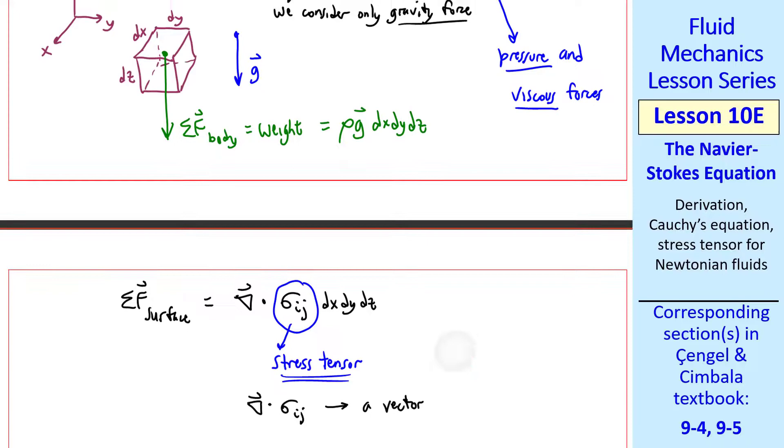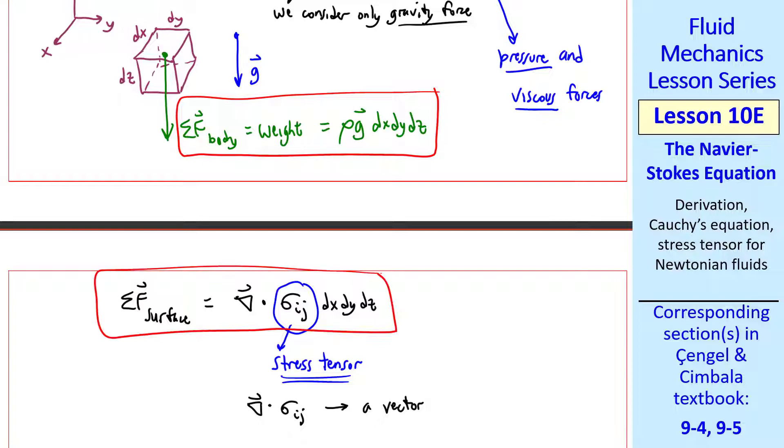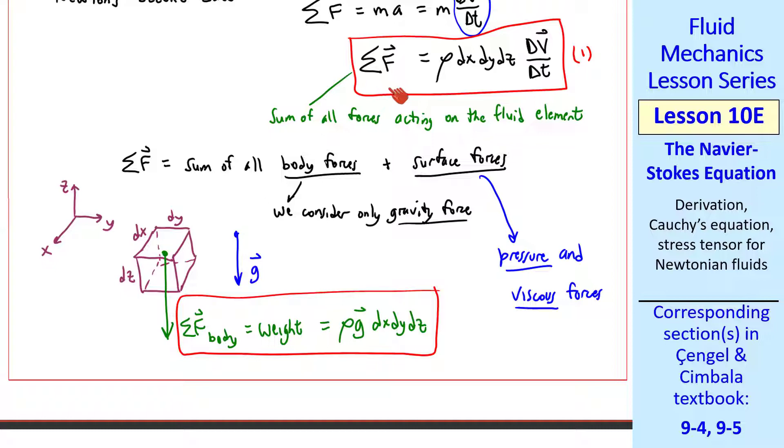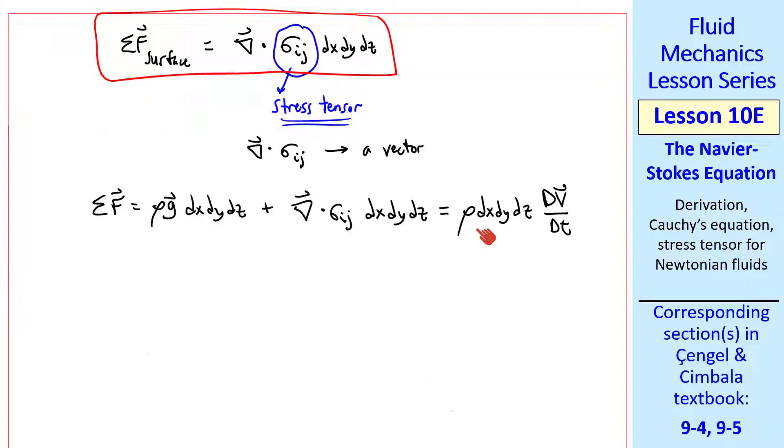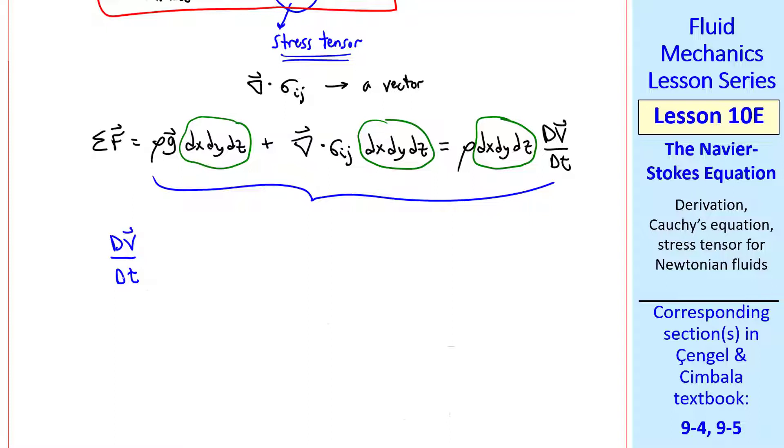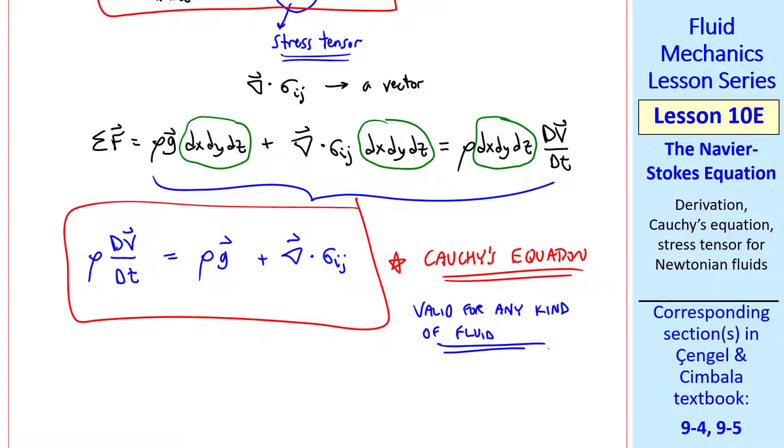We'll look at this stress tensor in a moment. For now, I want to combine the body forces and the surface forces and plug them into equation 1. So the sum of these two forces will equal this right-hand side. We write sigma f is the sum of all the body forces plus the sum of all the surface forces, and that equals rho dx, dy, dz times the material acceleration. Let's take this portion of the equation, and notice that dx, dy, dz appears in all three terms, so we can cancel it out. People in fluid mechanics like to put the acceleration term on the left side, so we have rho dv dt equal rho g plus del dot sigma ij. This is called Cauchy's equation, which is valid for any kind of fluid.